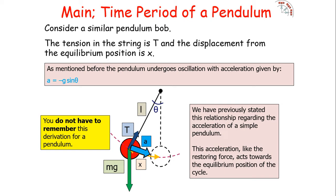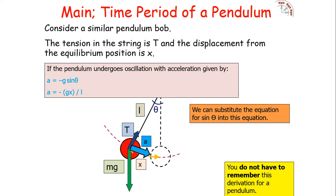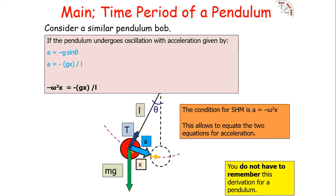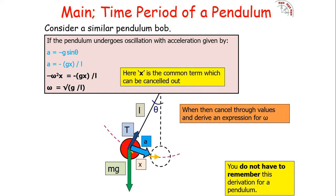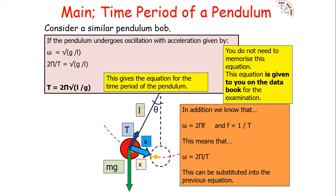Since a equals minus g sine theta and sine theta equals x over L, we can write a equals minus gx over L. We also know that a equals minus omega squared x, so minus omega squared x equals minus gx over L. The x terms cancel, giving omega equals the square root of g over L. Since omega equals 2 pi over T, we get T equals 2 pi times the square root of L over g — the equation for the time period of a pendulum.